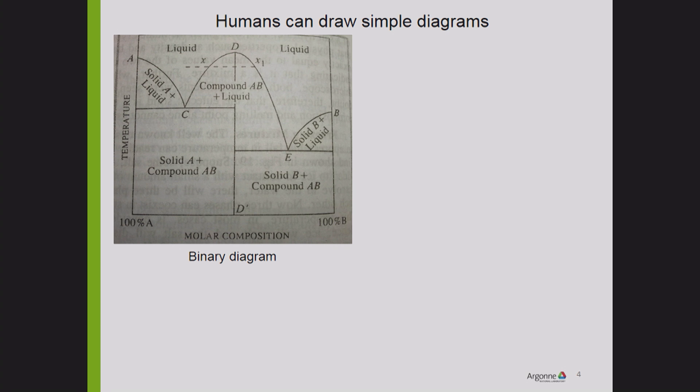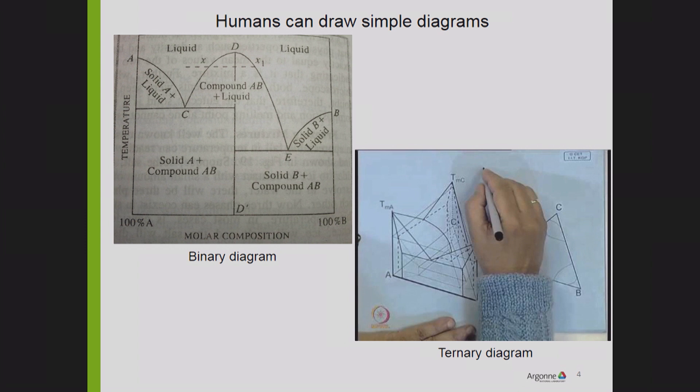Humans can also draw ternary diagrams that are far more complex because you need a triangle to represent the composition, A, B, C, and then a prism to represent the diagram. Temperature goes up. This has been going for quite a few decades. It doesn't seem to be as complicated.